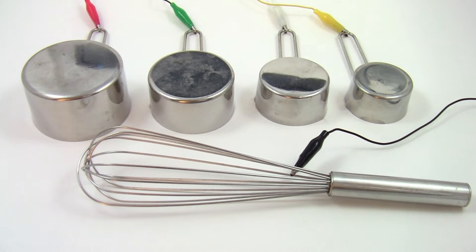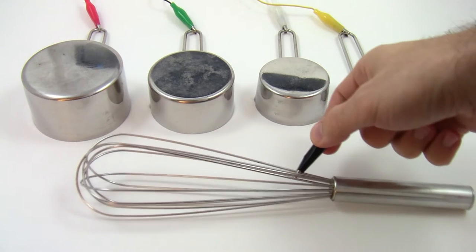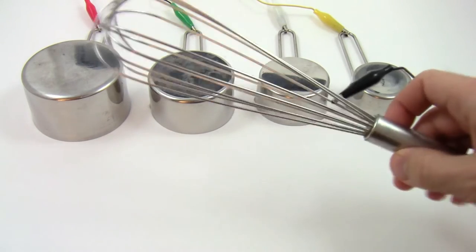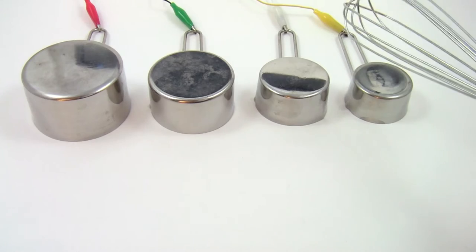This project will allow you to take everyday metal objects and convert them into an electronic drum set. You can see here I have four metal measuring cups and one metal egg beater, each connected to an alligator clip that is connected to the circuit off-screen. Each cup is programmed to play a different sound when I touch it with the egg beater.